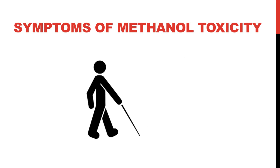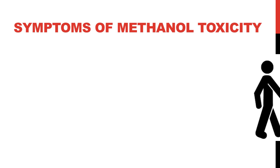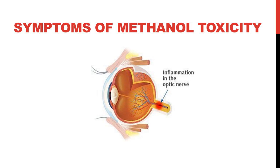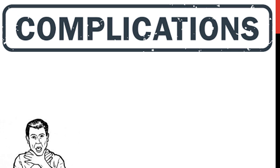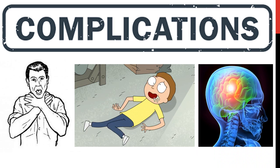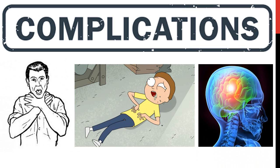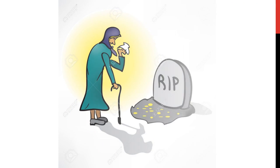In case of methanol toxicity, blindness can take place due to irreversible optic neuropathy. If the alcohol toxicity is not managed quickly, the patient will suffer from its complications, which may include choking, seizures, brain damage, stopping of the breathing, which will eventually lead to death.